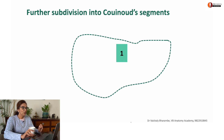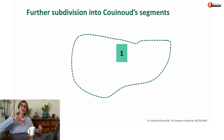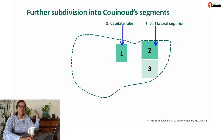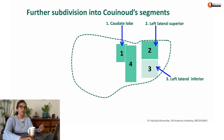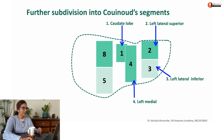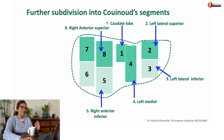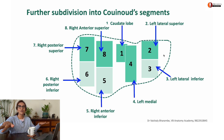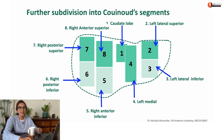Couinaud labeled the segments with the caudate lobe labeled as segment 1, and all the others going in a clockwise manner. Segment 2 is left lateral superior, 3 is left lateral inferior. Segment 4, which is the left medial, is further subdivided into 4a and 4b. Segments 5 and 8 are right anterior — right anterior inferior and right anterior superior respectively. Segments 6 and 7 are right posterior — right posterior inferior and right posterior superior. The horizontal line represents where the portal vein spreads out, and the vertical sectors are where the hepatic veins are found.